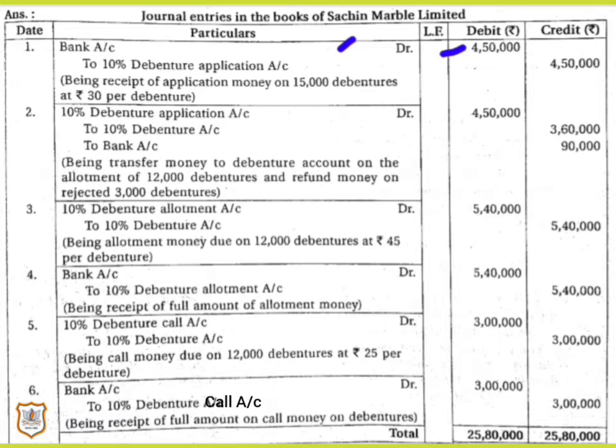The logical explanation of this entry: we asked for a loan from lenders in the market, so they give us money — Bank Account is debited following the rule of real accounts. Since the lenders are giving us money, they will be credited in the 10% Debenture Application Account, following the rule of personal accounts — credit the giver.